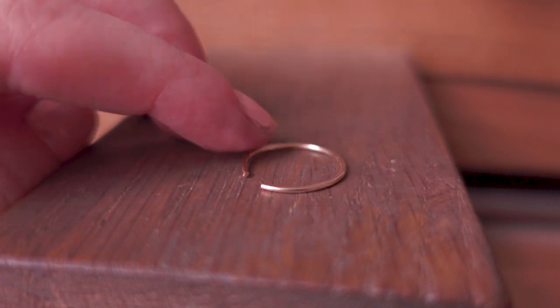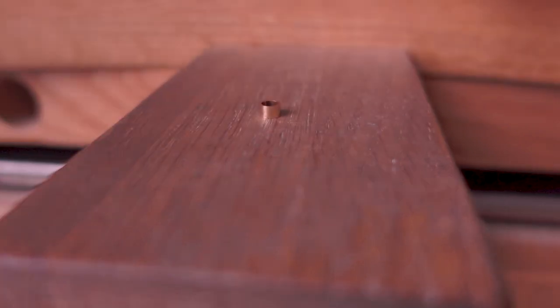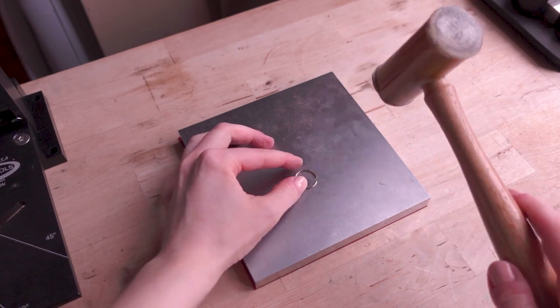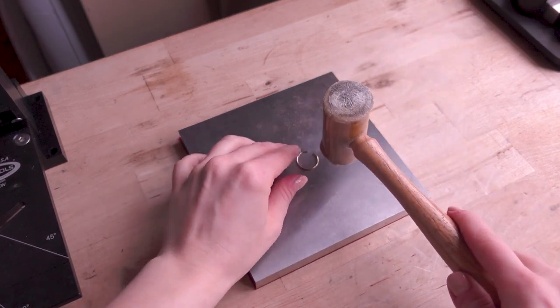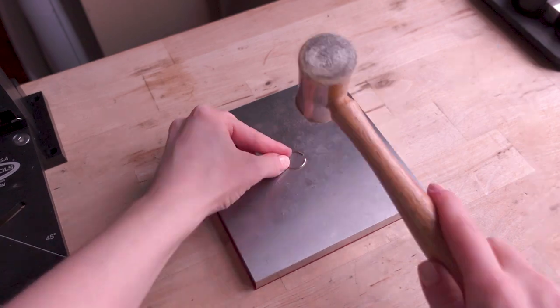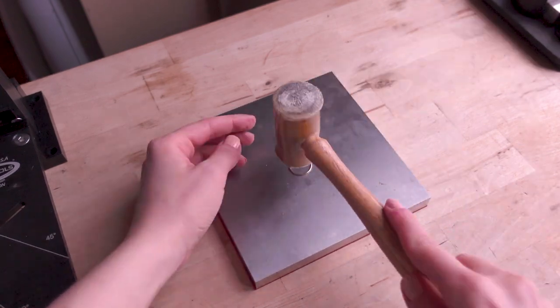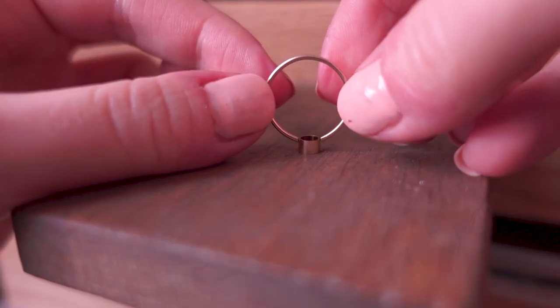There shouldn't be any spaces in there. And also as you can see it's not very flat. So I'm just going to flatten the ring a little bit on the steel block with the rawhide mallet. So I'm not leaving any marks on it. And fitting again. Looks perfect.